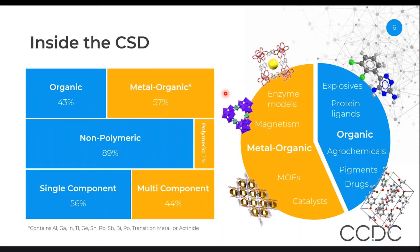The data is quite diverse. We have about 50% of the structures that are organic — so they don't contain any metal or non-organic elements such as aluminum, gallium, etc. And the other half of the database is metal-organic.